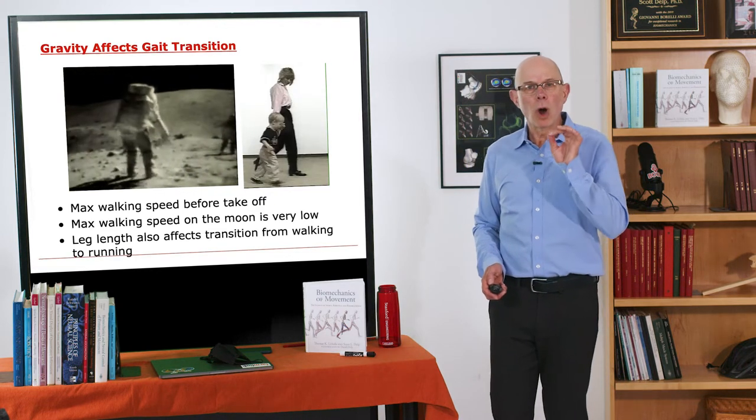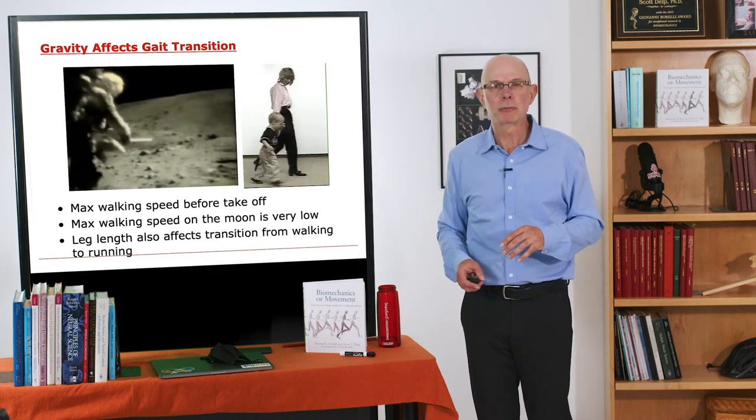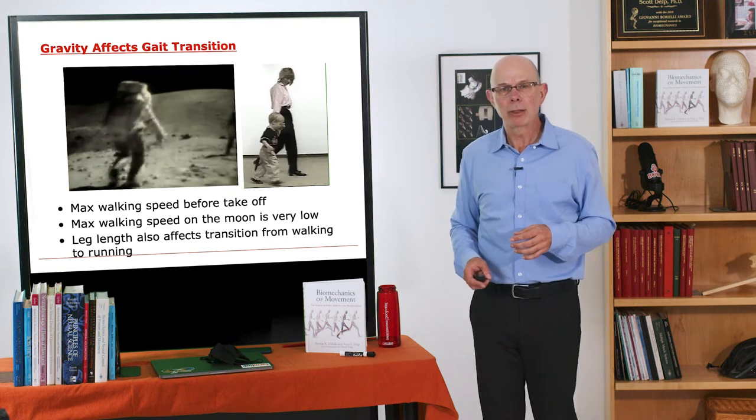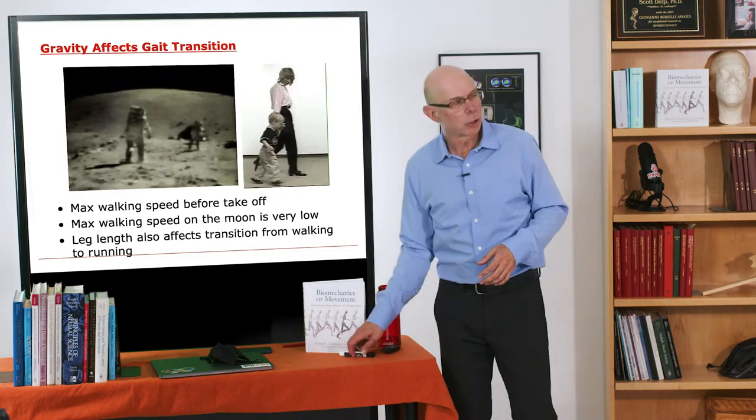So their walking speed before they would take off and take flight was very low. So they adopted this bounding gait on the moon. And that happens for a simple reason.